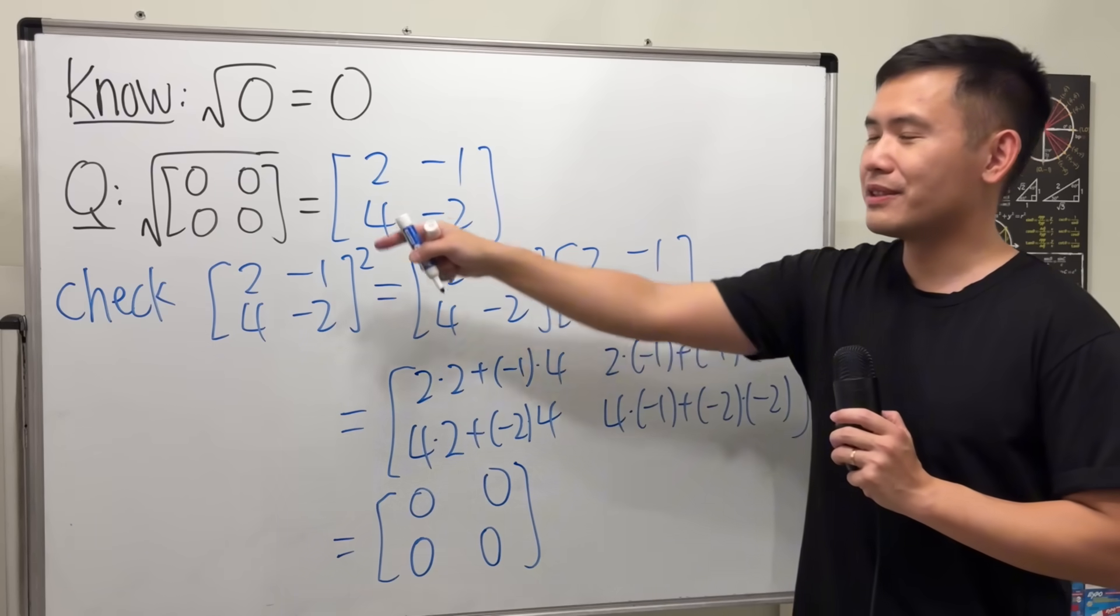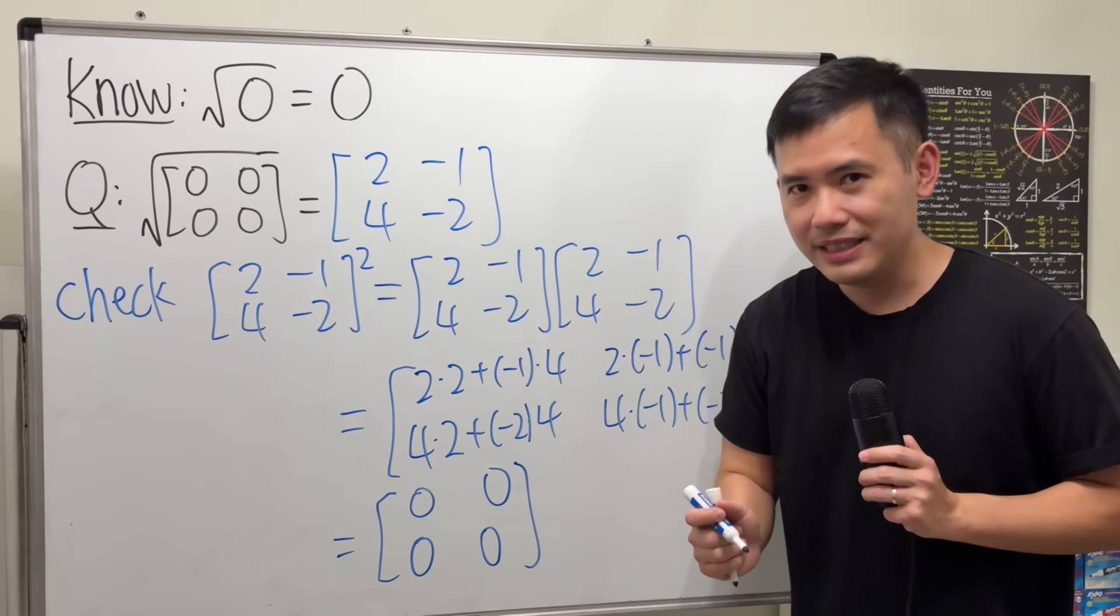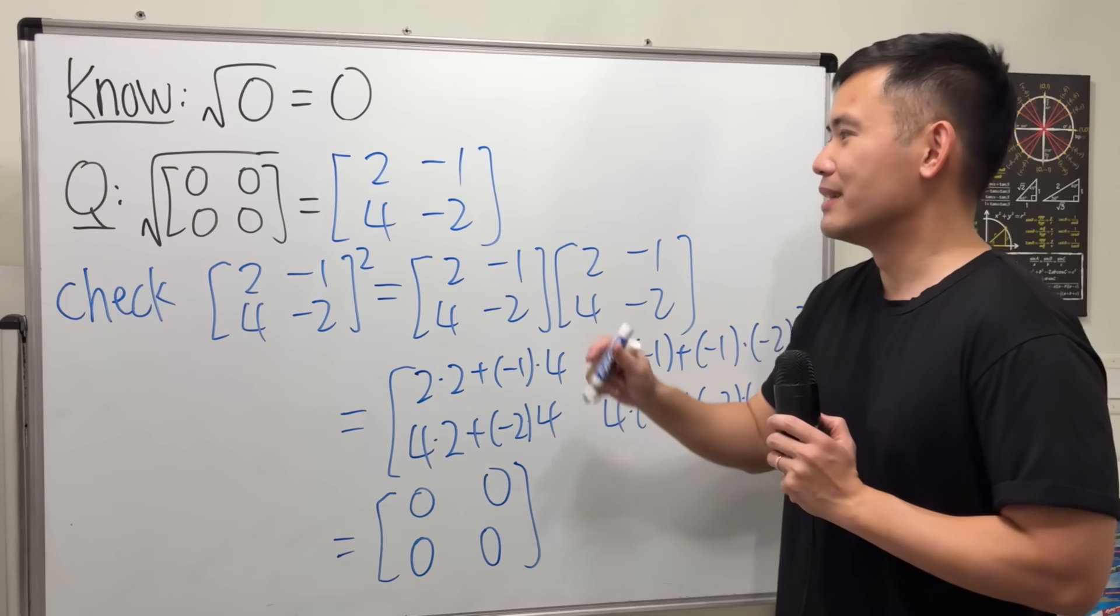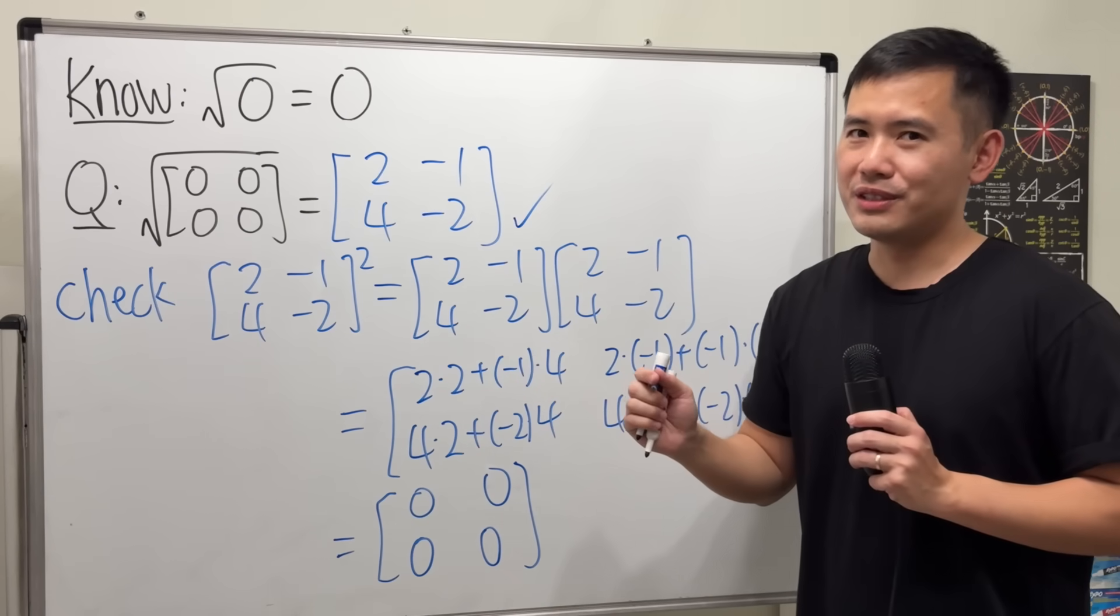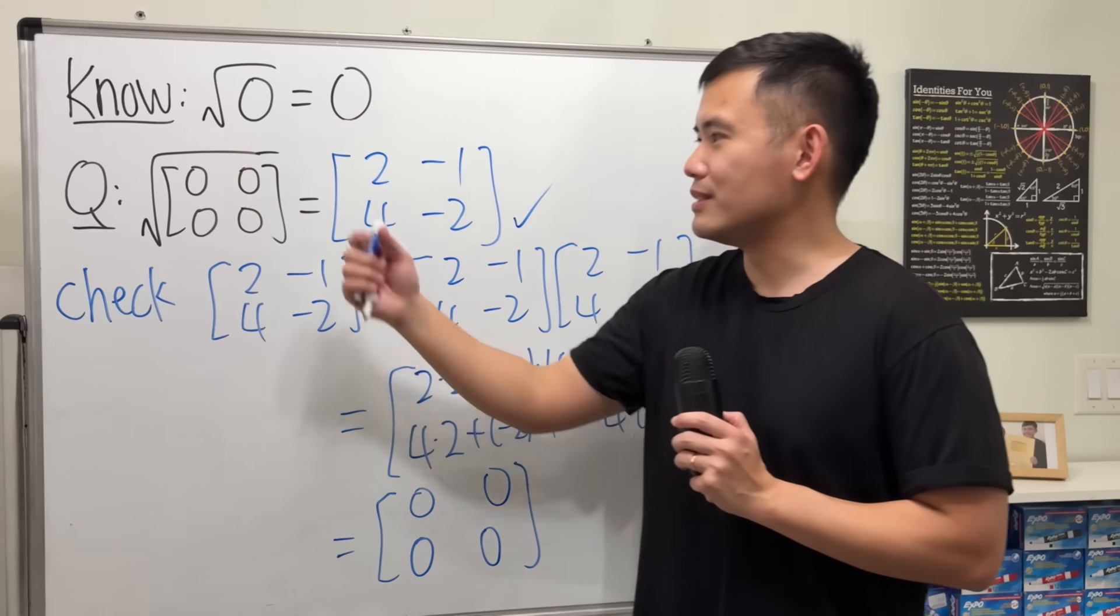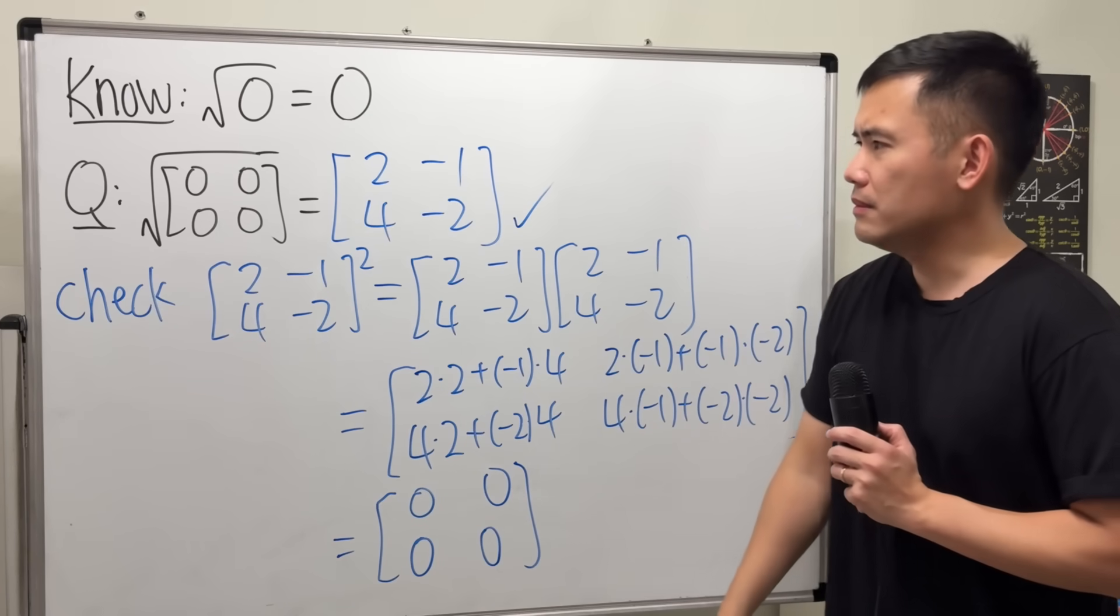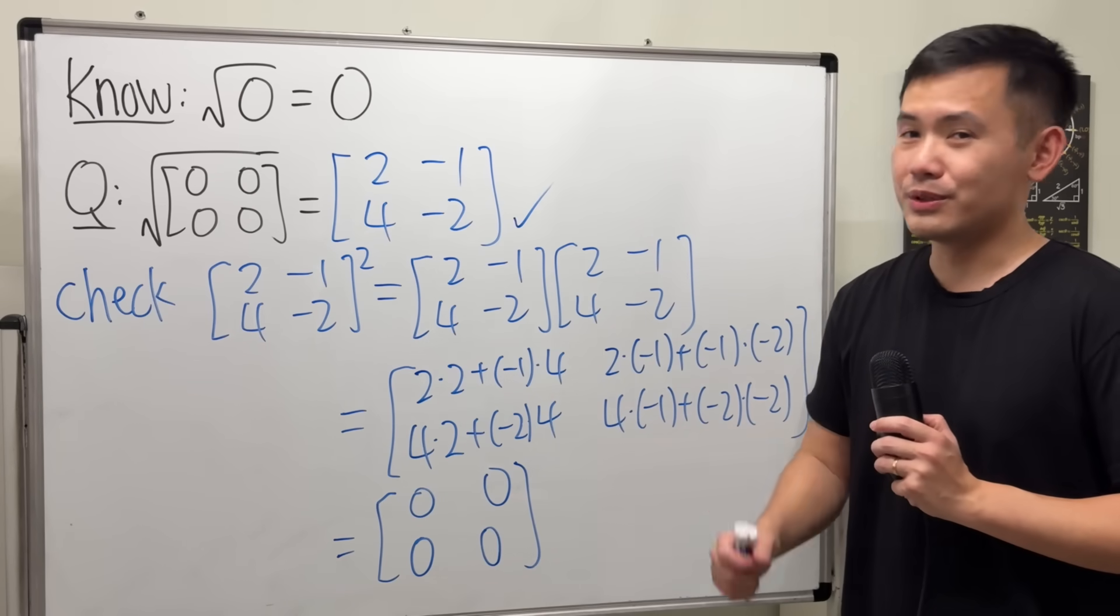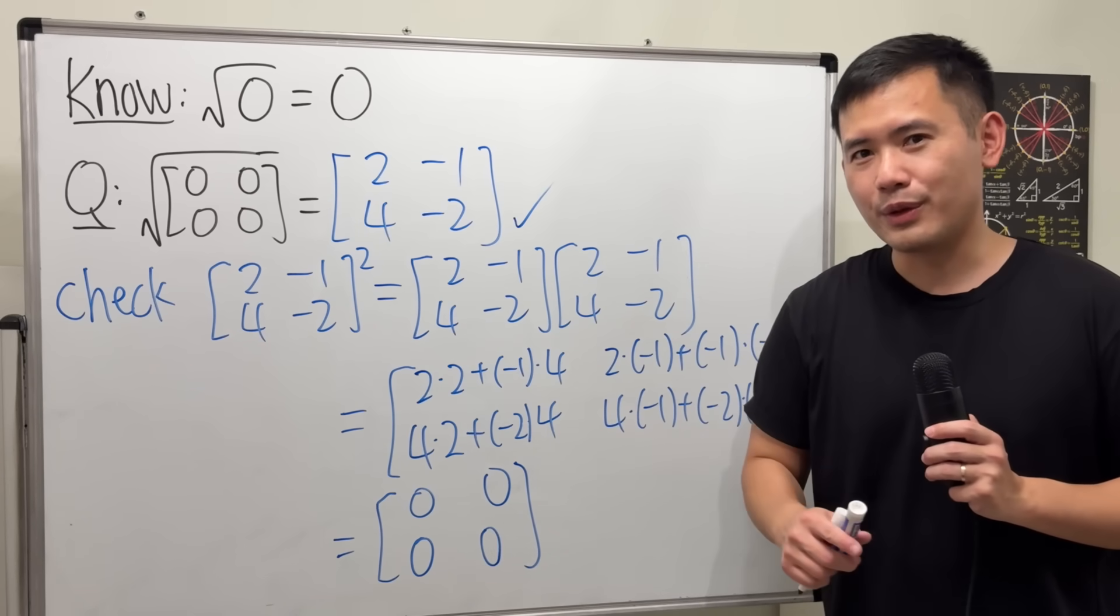All right, ladies and gentlemen, this right here is equal to 0, this right here is equal to 0, this right here is 8 minus 8 equal to 0, and lastly this right here is negative 4 plus 4 equal to 0. So as I told you, this right here is an answer for that. Because in fact, we have infinitely many solutions for the square root of the zero matrix. How can we come with all the solutions though? That's what we are going to find out right now.